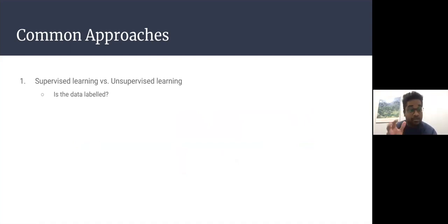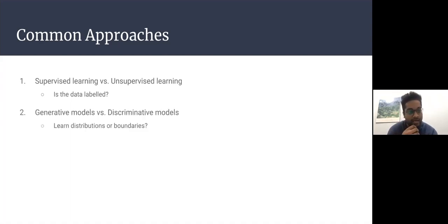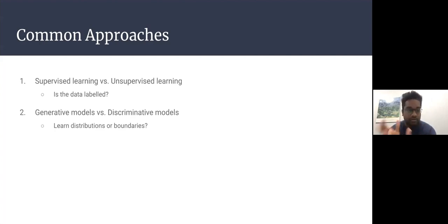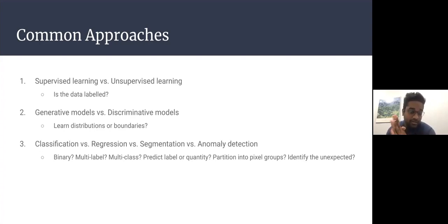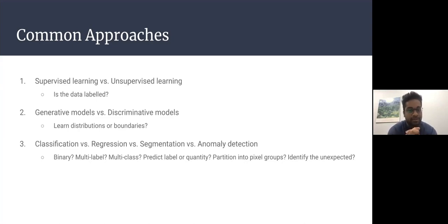If we're looking at a mixture of labeled and unlabeled data, we could use semi-supervised learning, which is a combination of both. There are also generative models versus discriminative models — generative models try to learn the distributions of the data, while discriminative models try to find the boundaries between those distributions. For classification problems versus regression problems, we try to predict a label or a quantity, and for segmentation we partition similar pixels into certain groups.